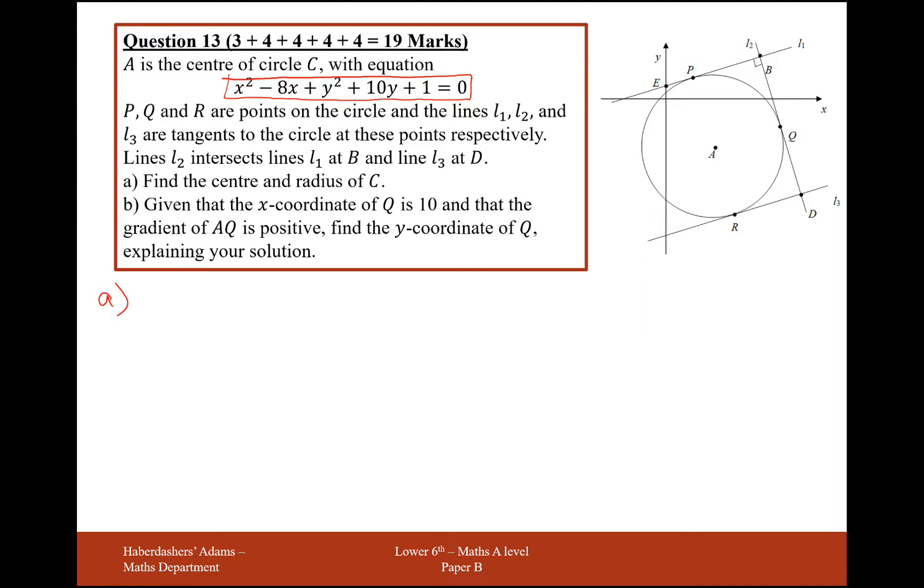Part A looks for us to find the center and the radius for the circle C. So the easiest way of doing this is to complete the square of this equation up here, once for the x variable, once for the y variable. So for x squared minus 8x, it's going to be x minus 4 because that's half of 8, and then we take away 16 because we've got to square that x minus 4, hence completing the square.